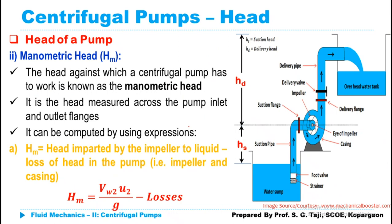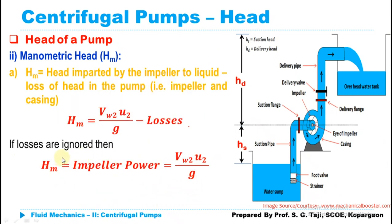If we ignore losses, then the manometric head becomes equal to the impeller head equation, that is VW2 multiplied by U2 divided by G. So this is the manometric head when we ignore losses taking place in the impeller, pipes, or casing.